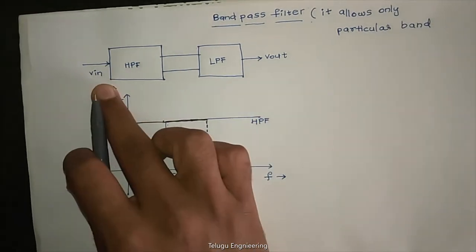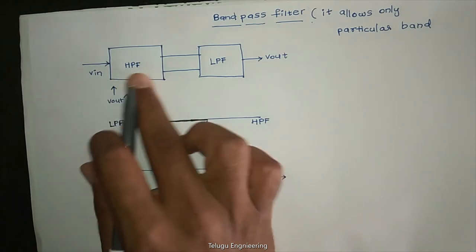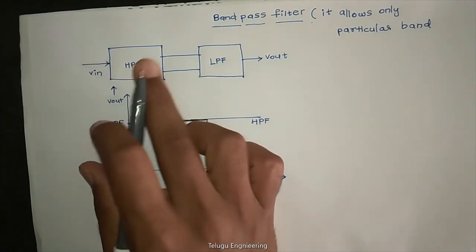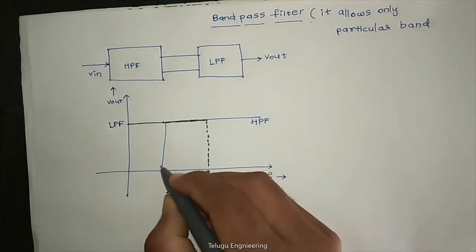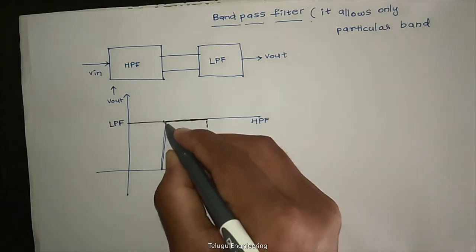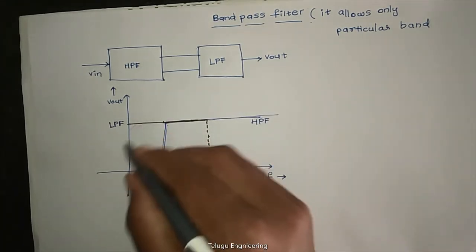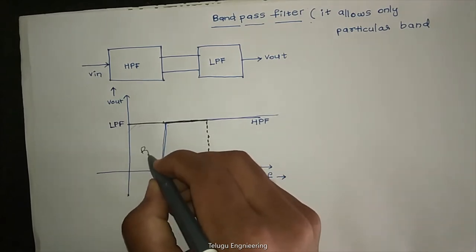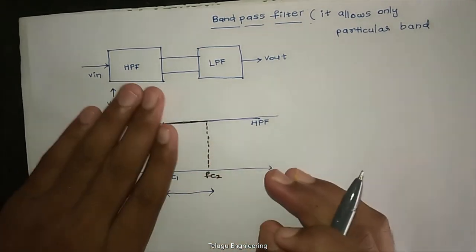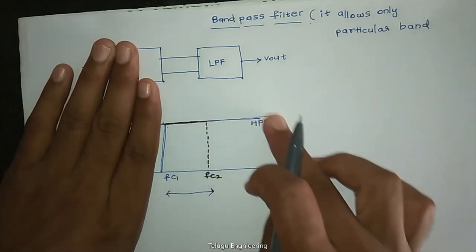High pass filter only allows higher frequencies. It will reject the lower frequencies. Then we take this output and send it to the low pass filter.